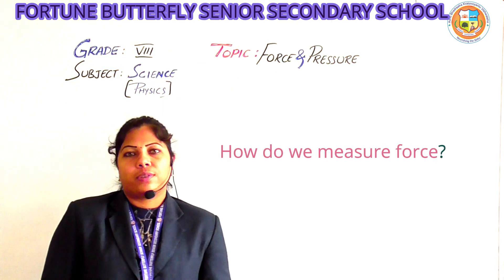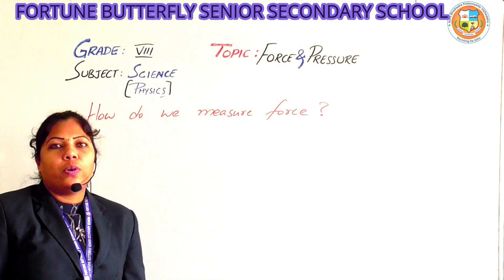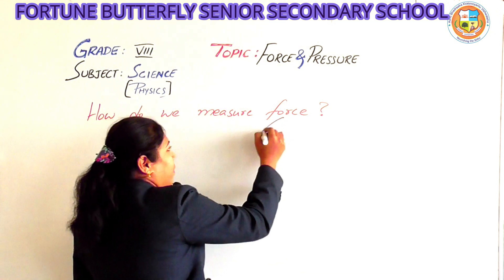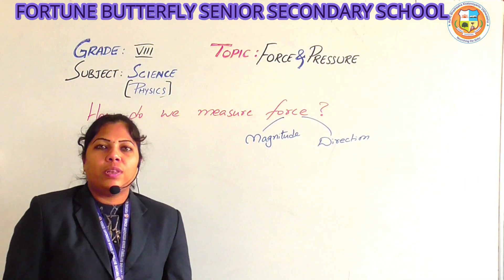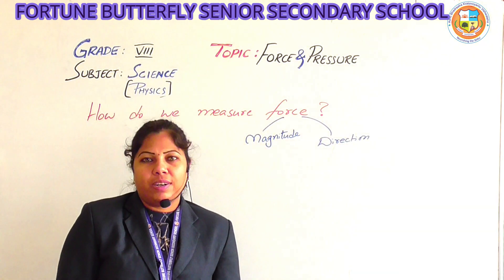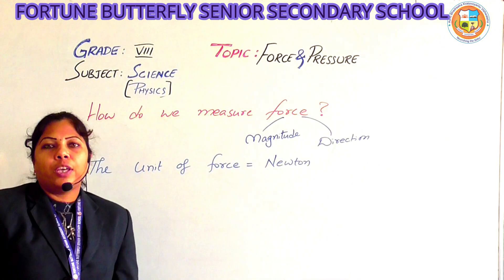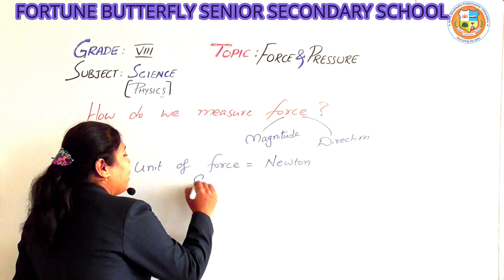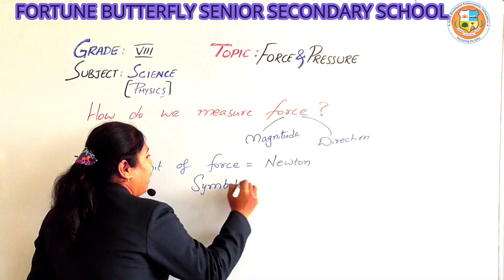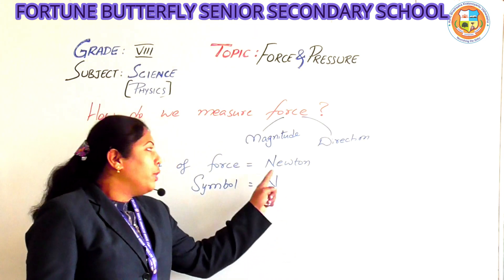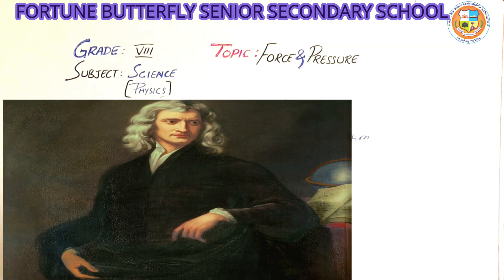How do we measure force? A force must have magnitude and direction, so we must know the unit of measurement to communicate these quantities. The unit of force is equal to Newton, represented by the symbol capital N. This name Newton came from the great scientist Sir Isaac Newton.